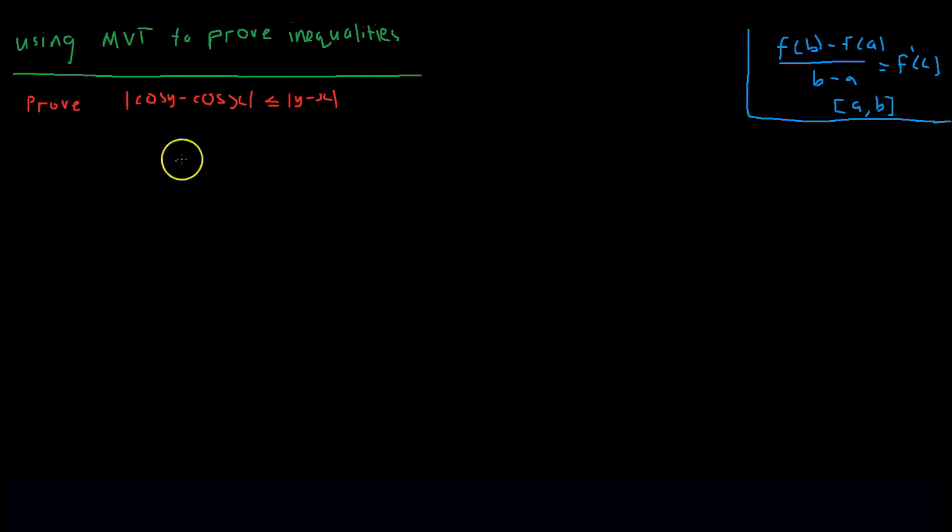So to begin, we want to define our function from the question and get it in the form of the Mean Value Theorem. We can see that cos is used for the function. So we can define f of x equal to cos of x.